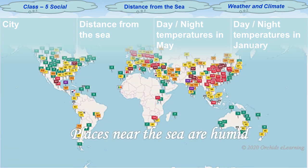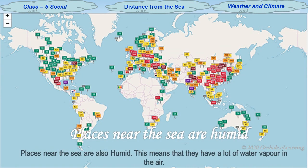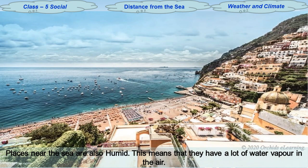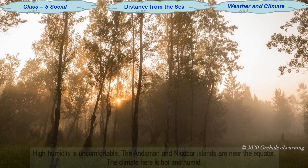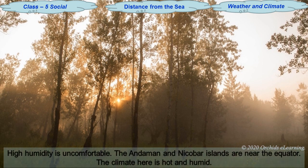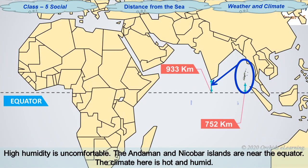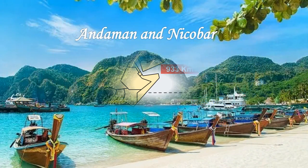Places near the sea are also humid, meaning that they have a lot of water vapor in the air. High humidity is uncomfortable as perspiration does not dry easily. The Andaman and Nicobar Islands are near the equator, and the climate here is hot and humid.